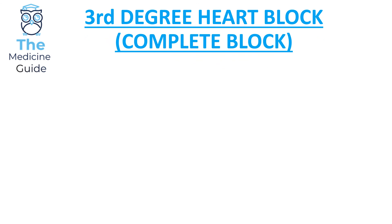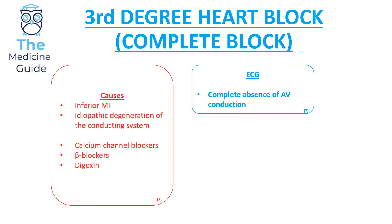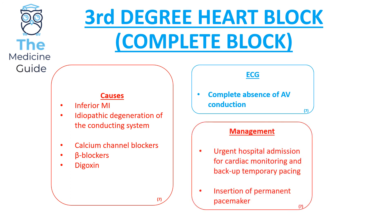To summarise: complete heart block involves a complete absence of AV conduction on the ECG. Third degree or complete heart block is caused by an inferior MI, idiopathic degeneration of the conducting system, and medications such as calcium channel blockers, beta blockers, and digoxin. Management is very important: these patients need to be urgently admitted to hospital for cardiac monitoring and backup temporary pacing, and they do need a permanent pacemaker.